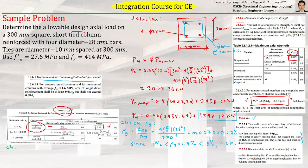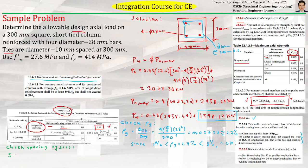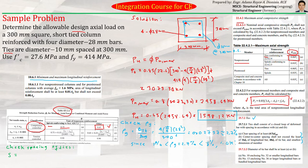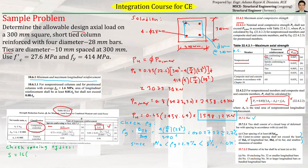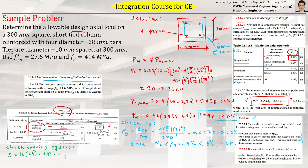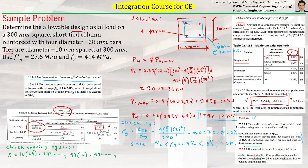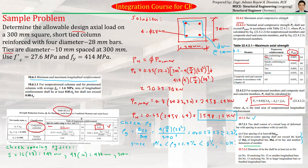So for the spacing, let's check the spacing of ties. So our S will be the least of 16 times the longitudinal bar diameter, which is 28. So that will be equal to 16 times 28. That will be 448 mm. And then 48 times the diameter of our ties. Our ties are 10. So this will be 480 mm. And then lastly, the smallest dimension of the member. And since this is square, the smallest dimension is 300 mm.